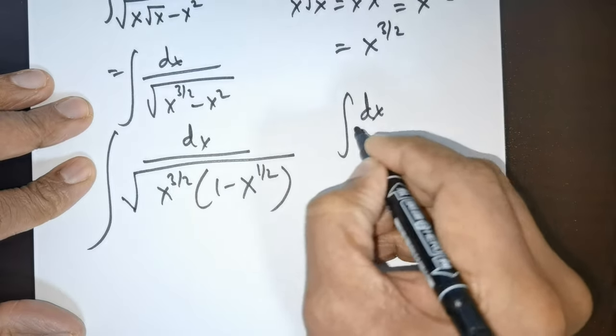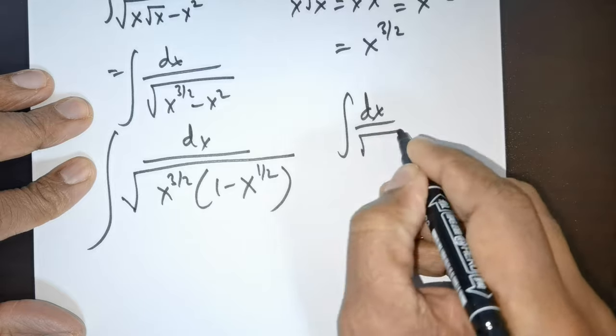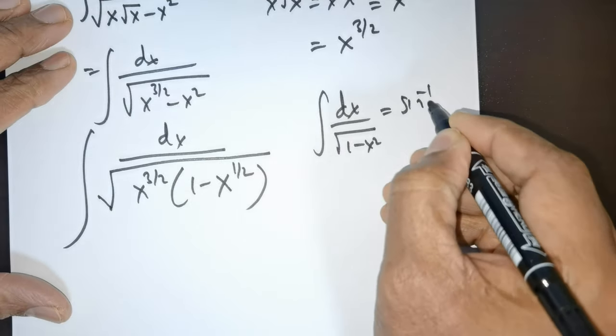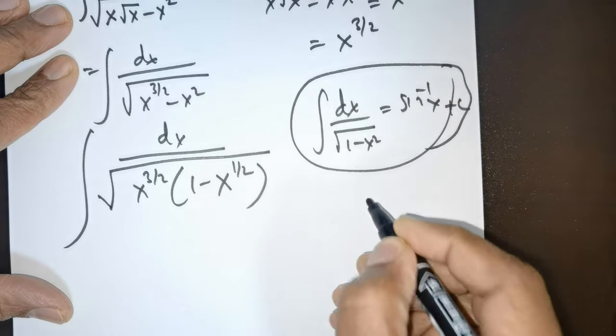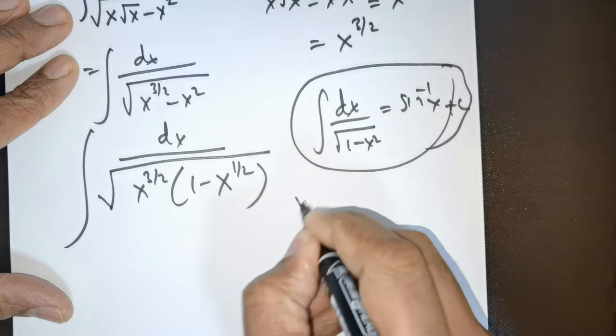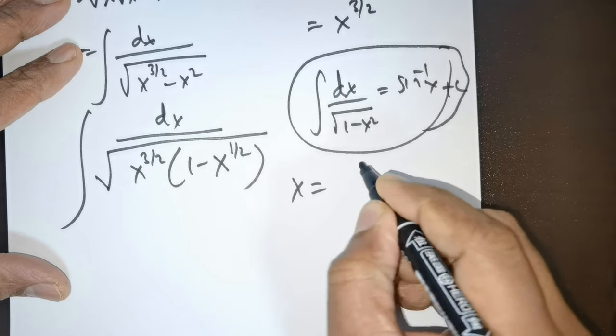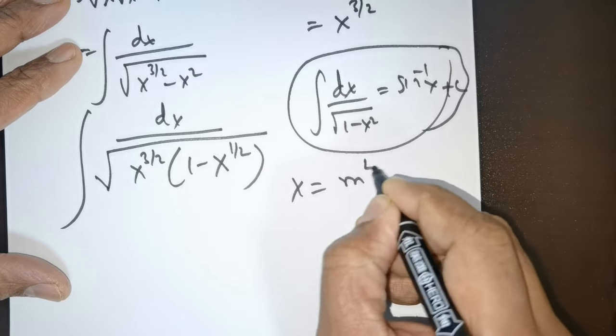Now the idea is to get this form: integral dx over root of 1 minus x squared, so that I can apply sine inverse of x plus c. This is the formula I'm aiming at. To get that formula, I'll take x to be equal to m raised to the power of 4.